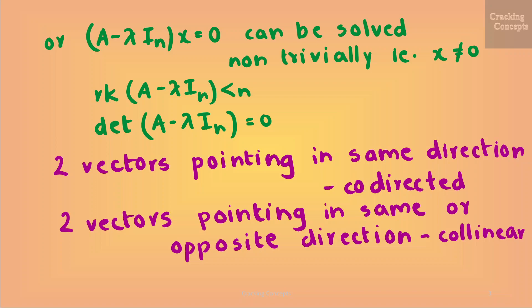Two vectors that point in the same direction are called codirected, whereas two vectors are collinear if they point in the same or the opposite direction.